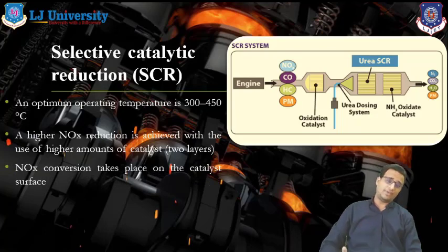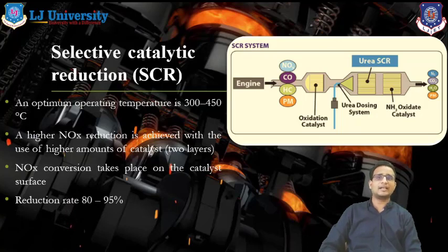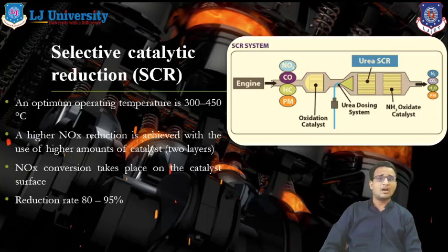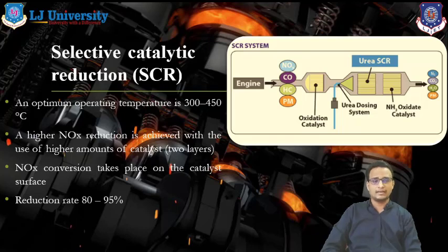At the surface of the catalyst, the catalytic converter converts NOx coming out from the engine into the form of N2 and H2O. This is the main advantage of selective catalyst reduction — we convert only NOx particles in the exhaust. The reduction rate achieved in SCR is majority 80 to 95 percent NOx conversion within the catalyst system.